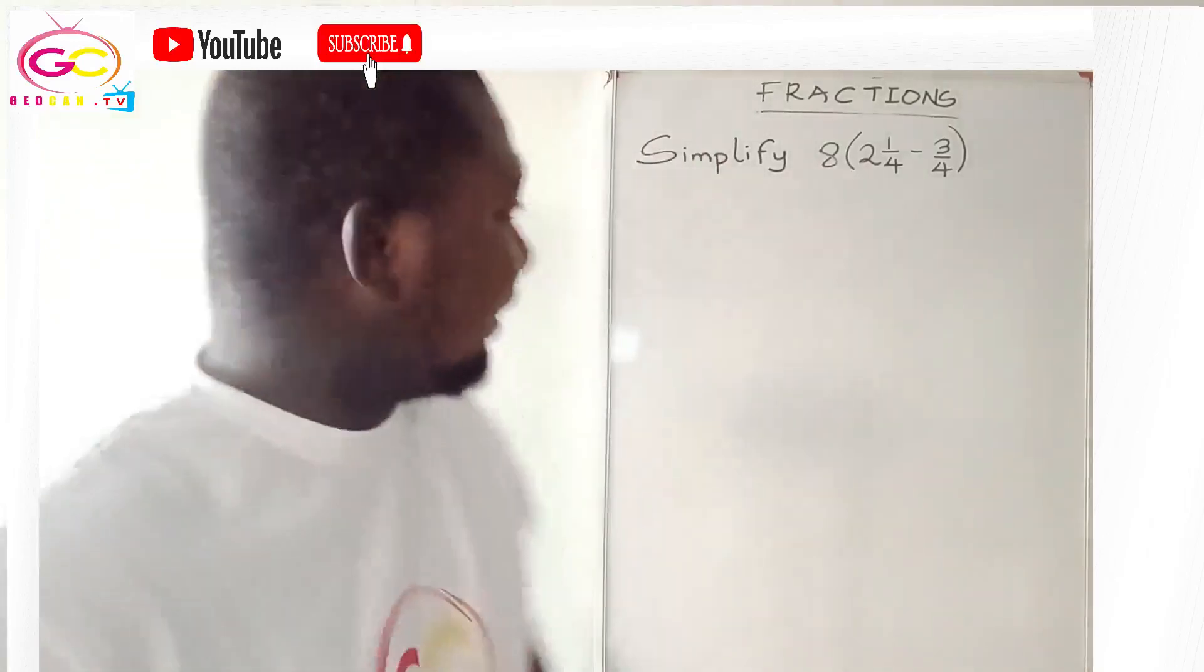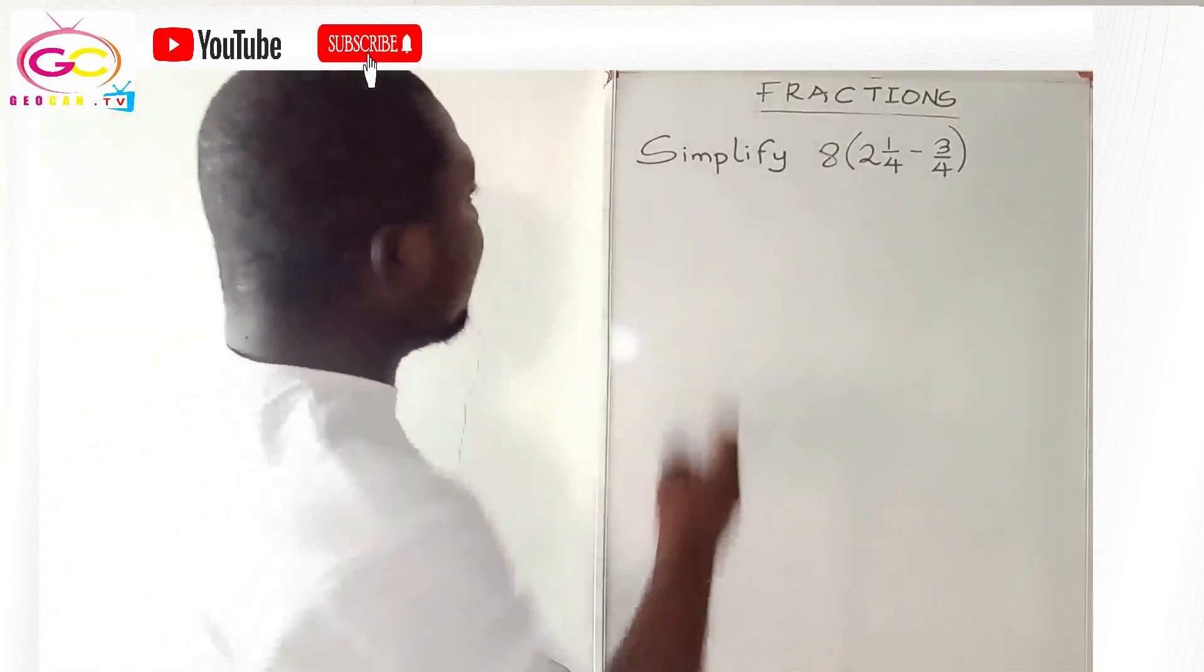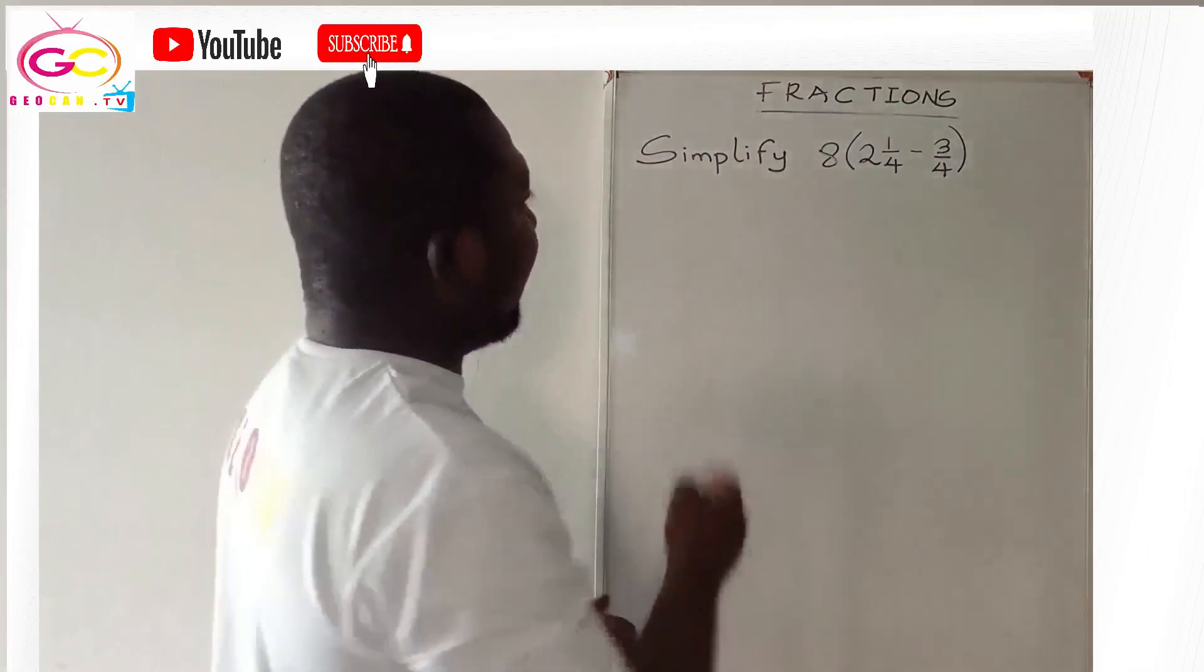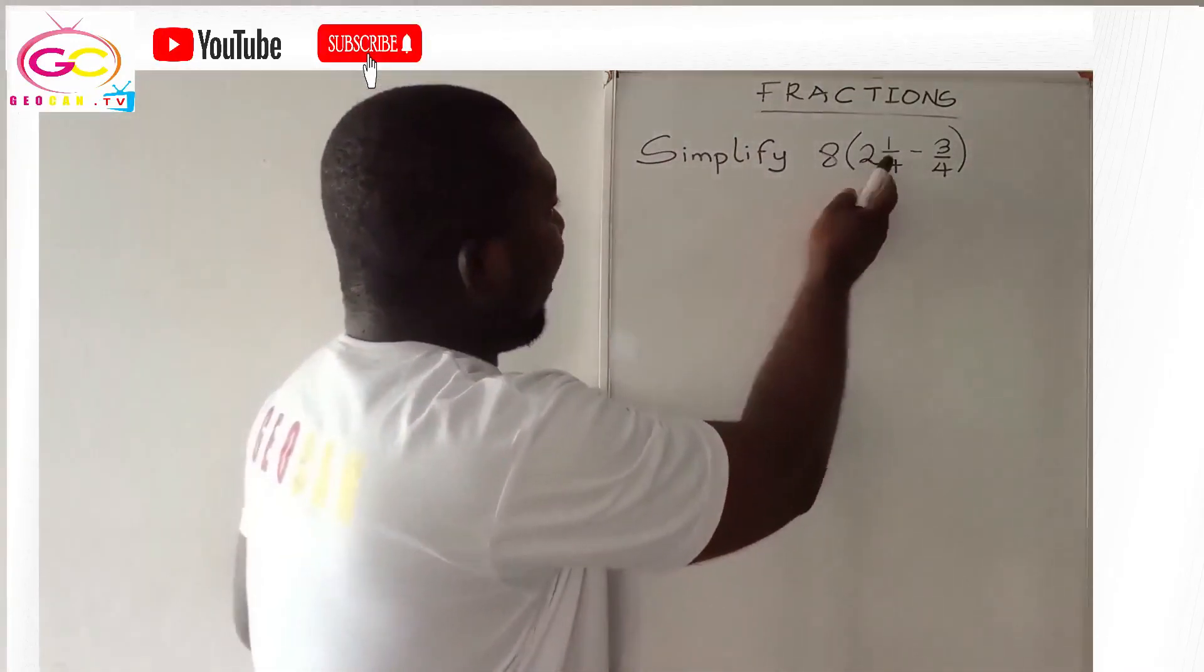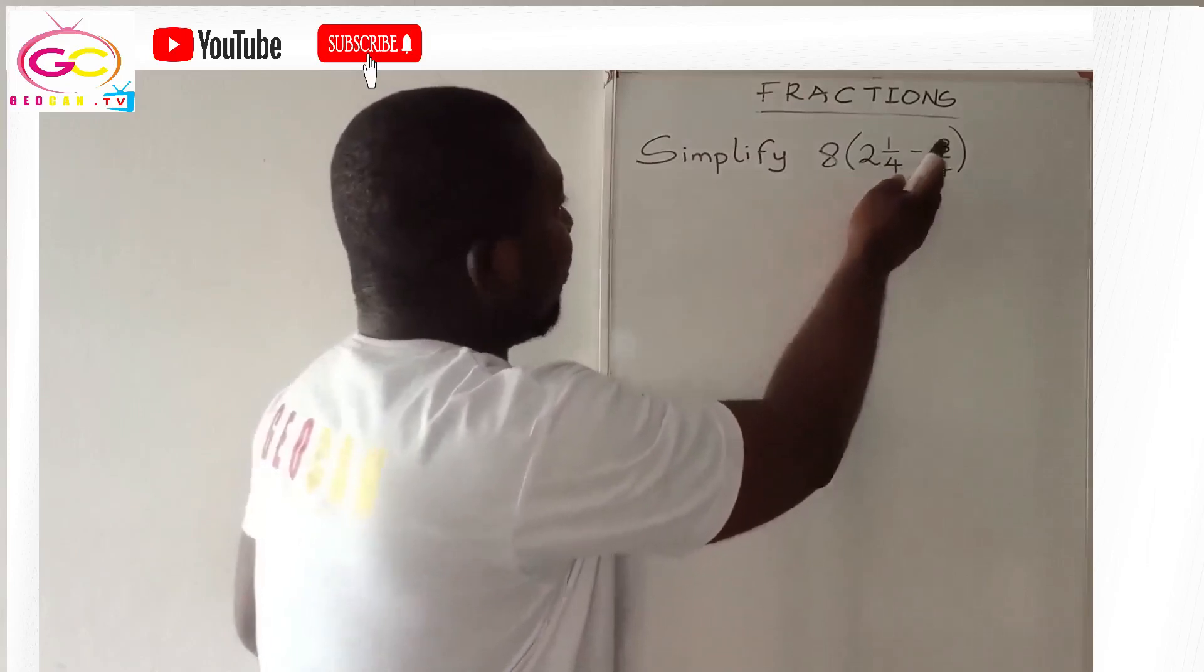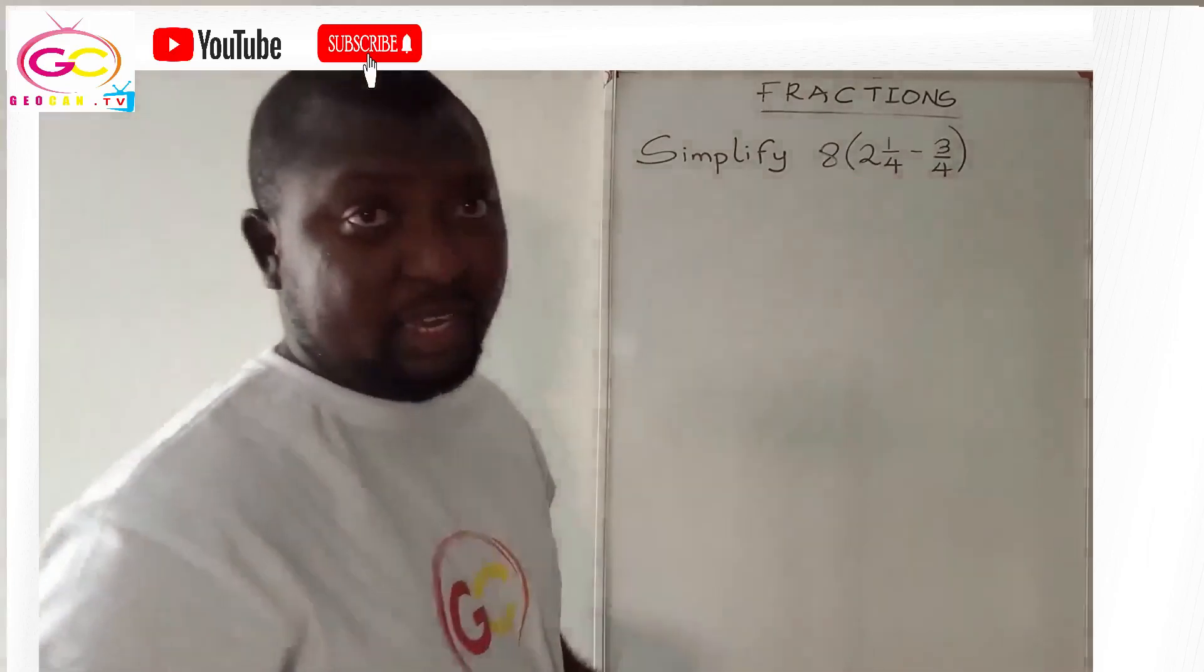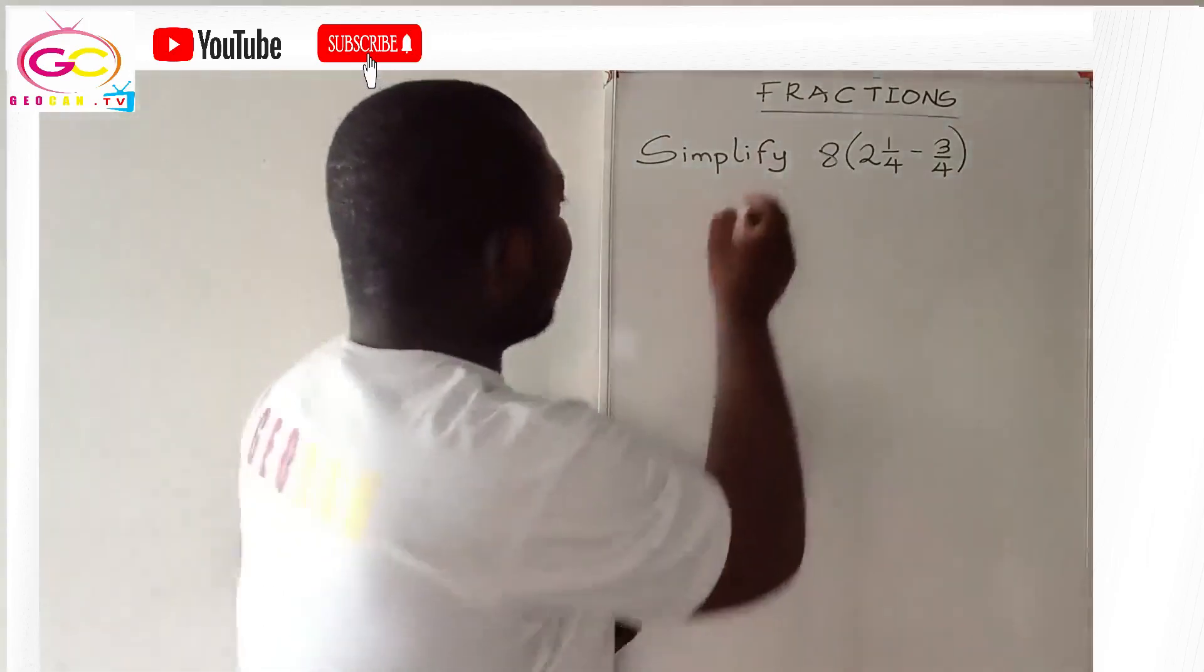I welcome you all to Math in a Minute. Yes, what do we have? Simplify 8 into bracket 2 whole number 1/4 minus 3/4 bracket close. Easy as ABC. That's our solution.